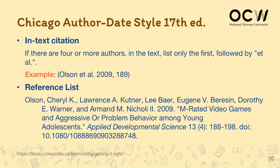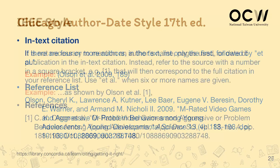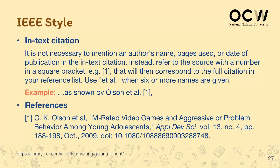With Chicago, how do we cite multiple authors? It will be last name, et al., followed by publication year, then followed by the page number you're citing. And at last, with IEEE style, multiple authors will not be indicated in the in-text citation — it will still be a square bracket followed by a number indicating its order in the reference list.